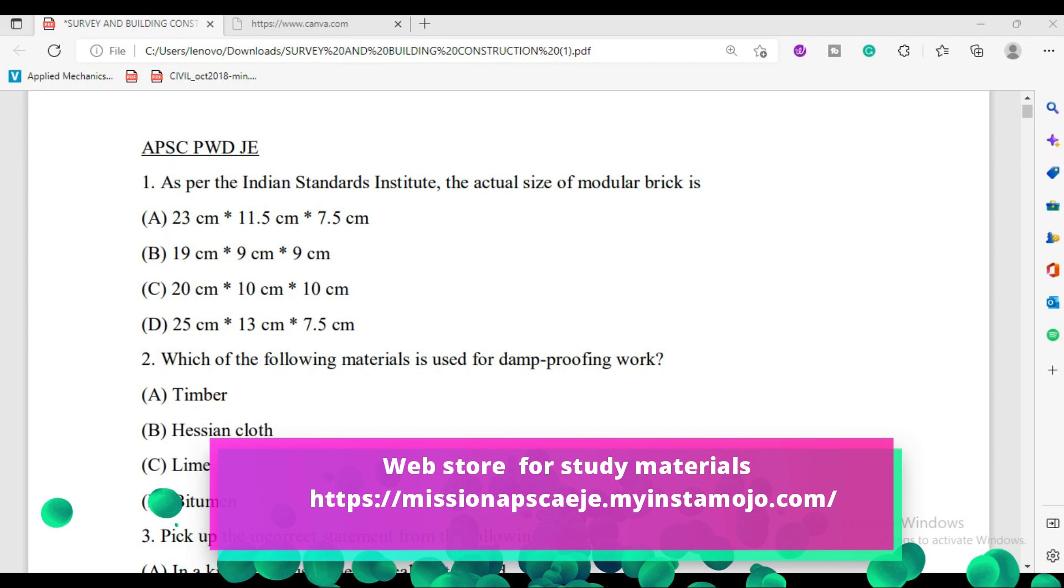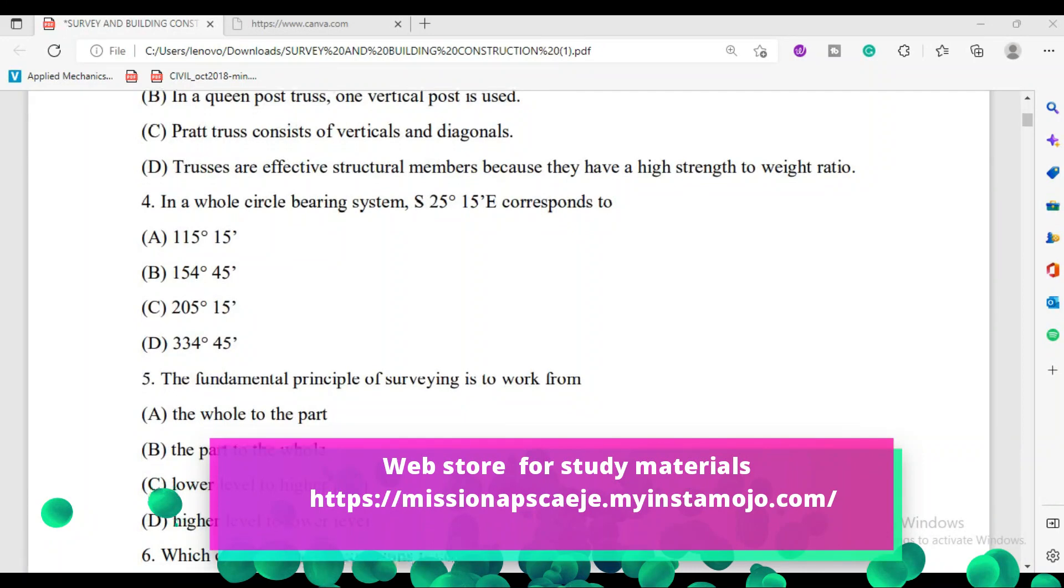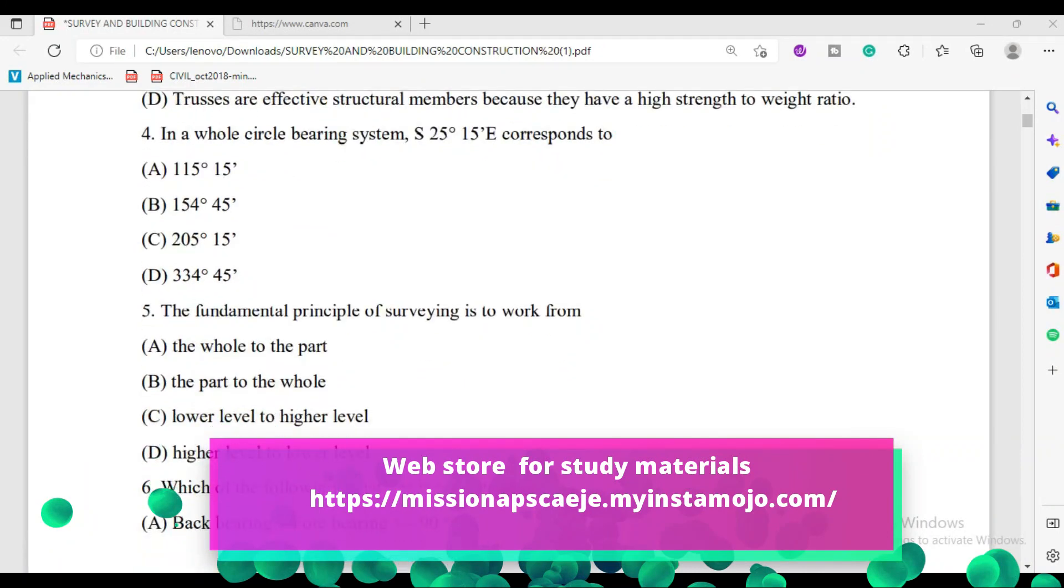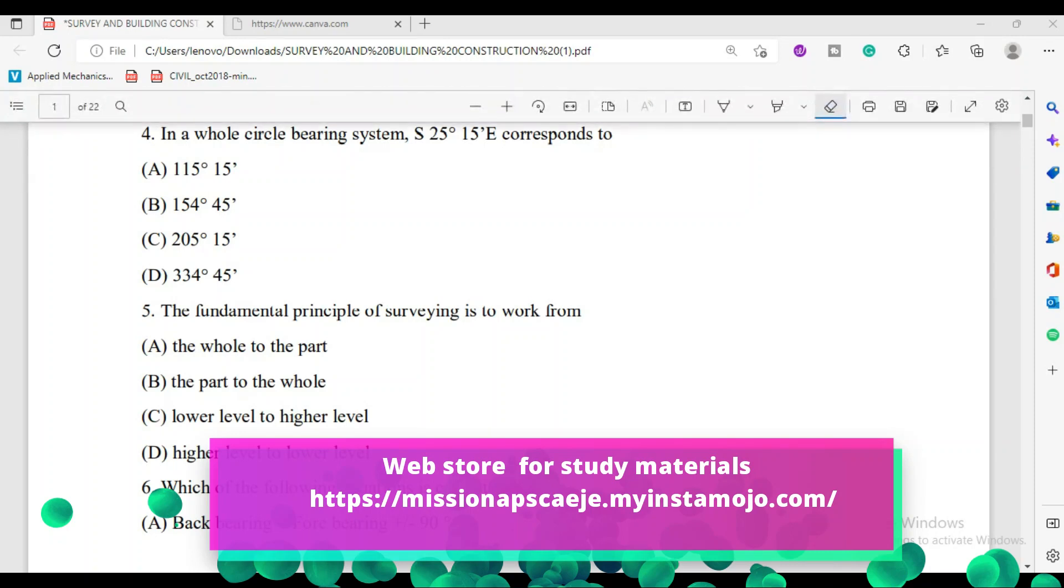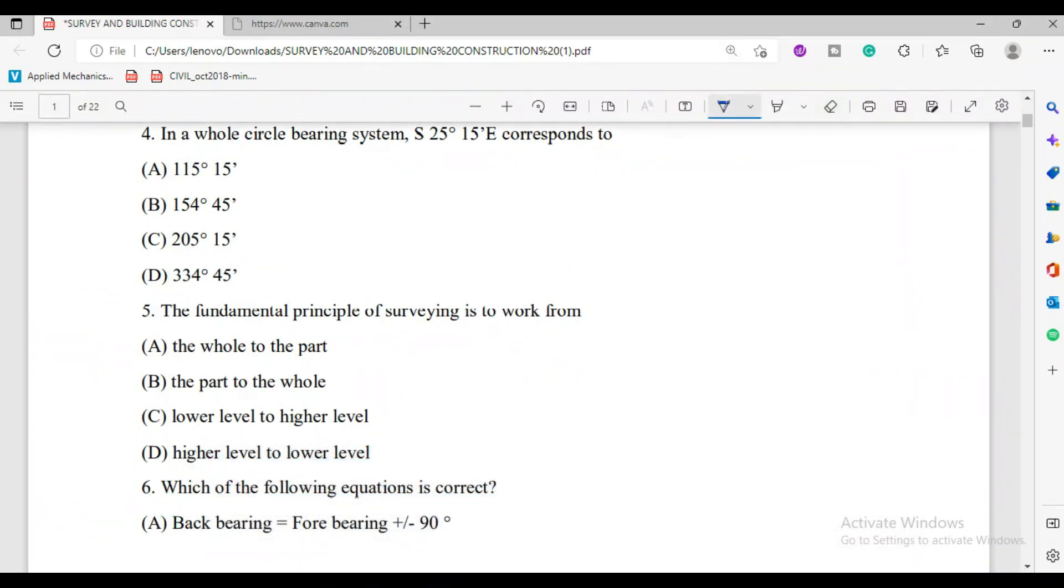In 2020, we are going to talk about the Mishan APSC. Mainly we have to draw the line. Here is the direction to south and east. If you try to draw the line, this part is north. If I let this side be south, this one is east and this one is west. So here it is given as S 25°15' E.